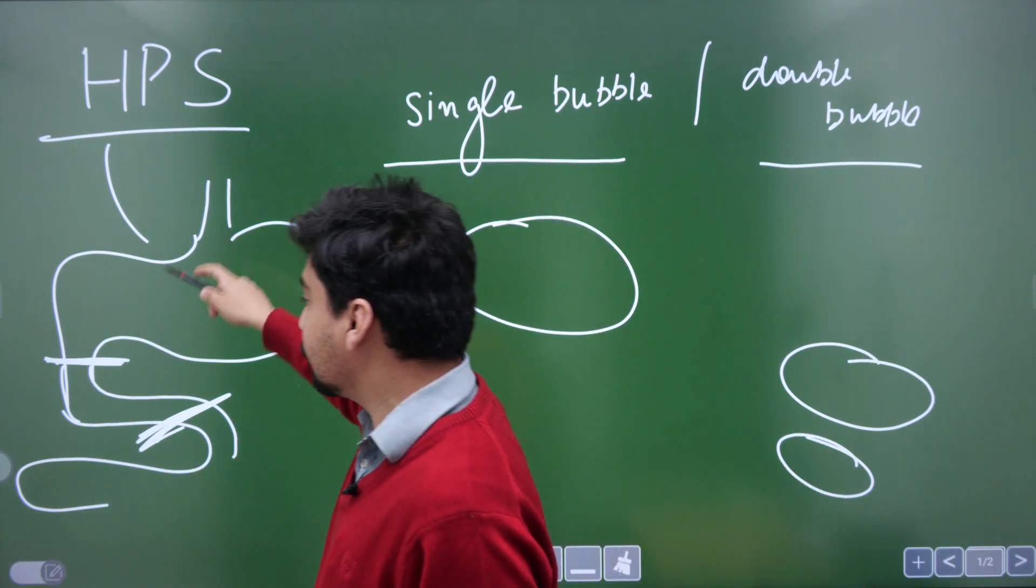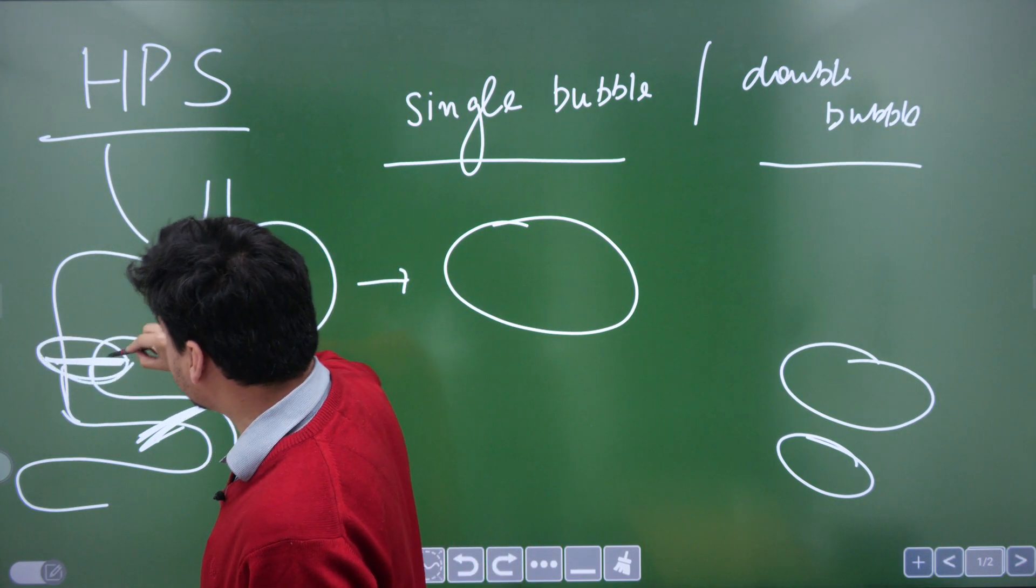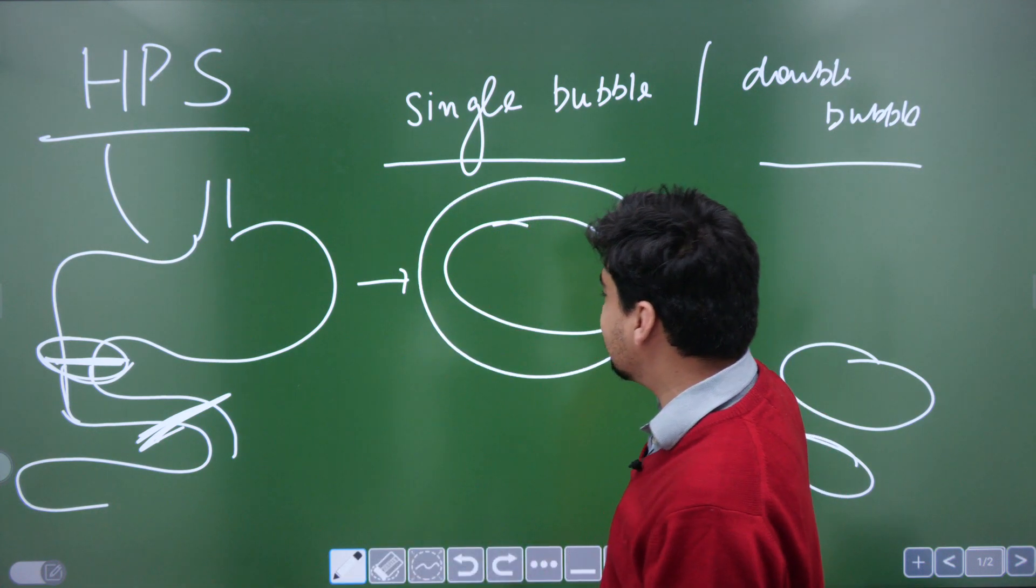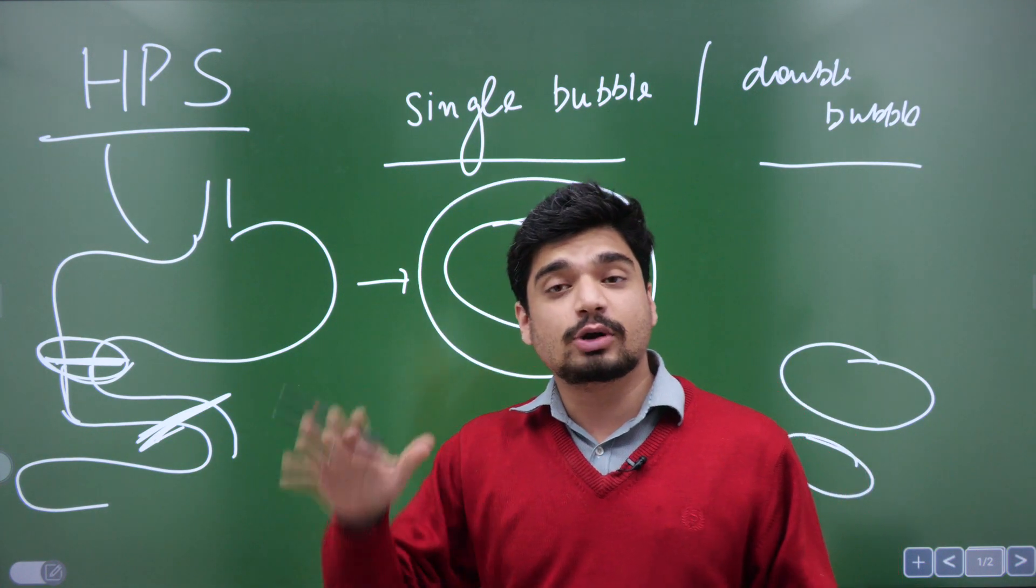So in hypertrophic pyloric stenosis, we know the stenosis is occurring at the level of pylorus of stomach. So on the x-ray, there will be a single bubble, which is basically air inside the stomach which will be visible on the x-ray.